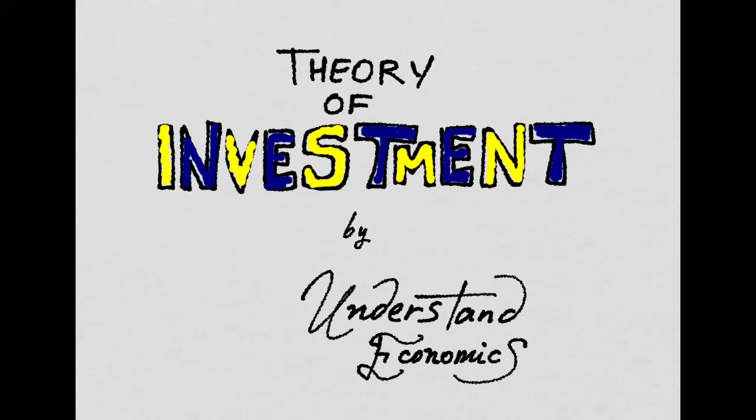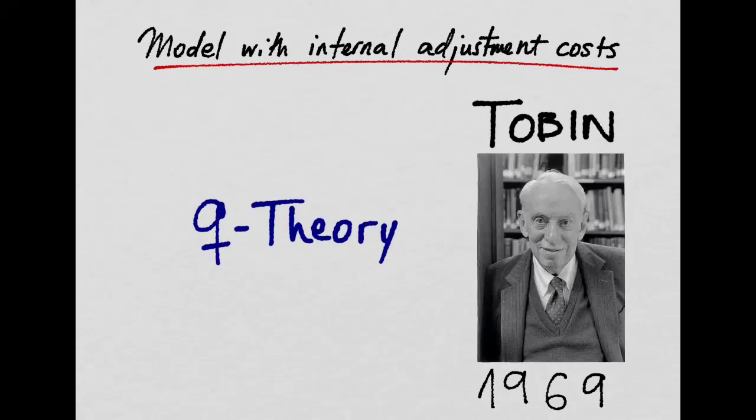In this new video, I'm going to talk about Theory of Investment. We're going to focus on a model in which firms face some costs of adjusting their capital stock. It was used for the first time by James Tobin in 1969, and it is known as the Q-Theory.